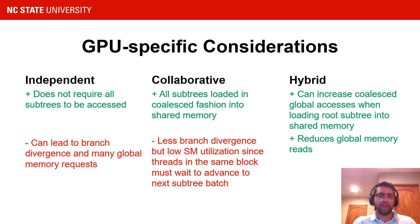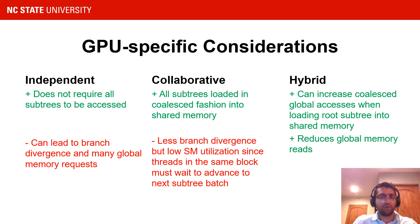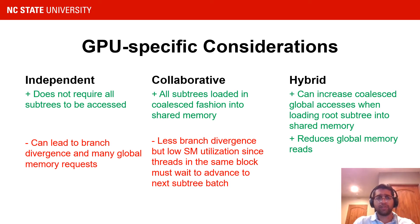For GPU, there are several effects that arise from each of the kernels. The independent kernel doesn't force all subtrees to be accessed, which can be beneficial if subtrees are not visited by any query. However, there's a high degree of branch divergence between threads in the same warp, since they can advance to different subtrees and trees without synchronization. The collaborative kernel loads all subtrees into shared memory on GPU, which can increase memory coalescing and allow for higher bandwidth memory accesses. There can be wasted work and low streaming multiprocessor utilization when subtrees aren't accessed frequently, and threads in the same block have to wait to advance from one subtree batch to the next, leading to many wasted cycles. The hybrid kernel can increase memory coalescing, primarily for the root subtree, and since the root subtree tends to be the densest portion of the tree, there can be a significant reduction in global memory reads.